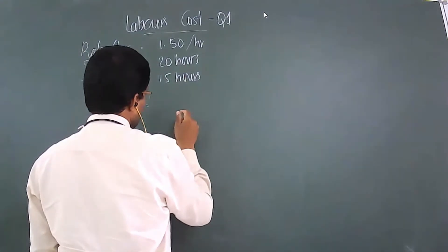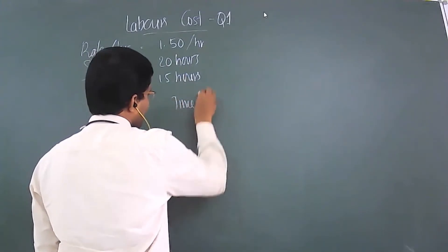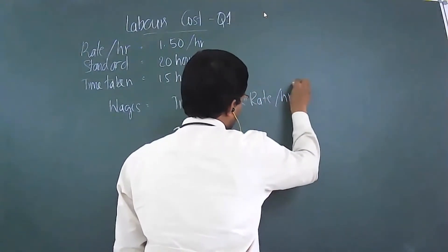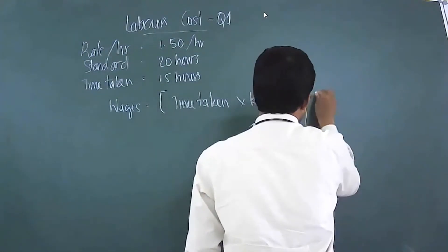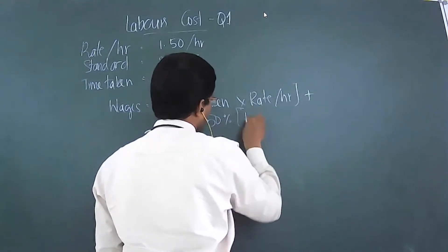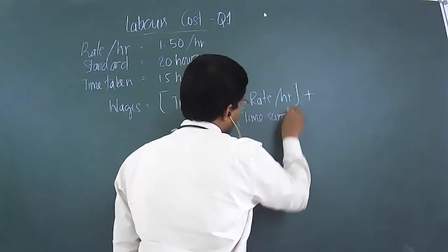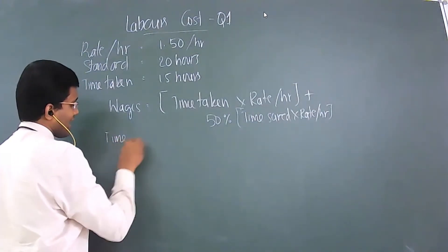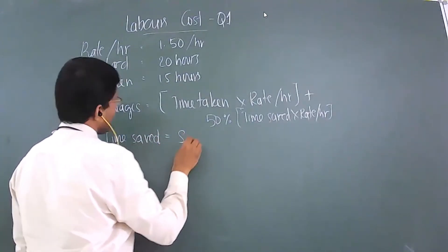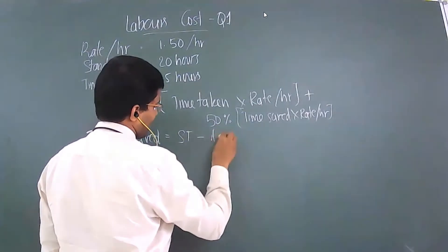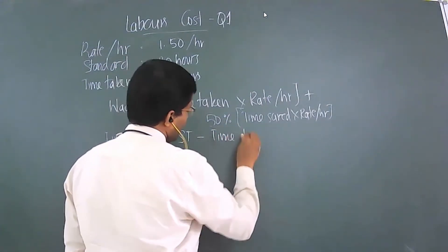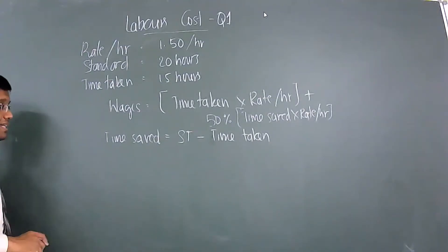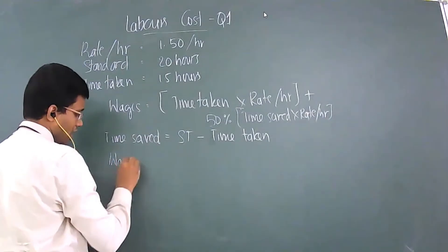Halsey's Plan is calculated as: Time Taken × Rate per Hour, plus 50% of Time Saved × Rate per Hour. Time Saved is calculated as Standard Time minus Actual Time Taken. So here, time saved = 20 − 15 = 5 hours. This is how we calculate time saved before computing the wages under Halsey's Plan.